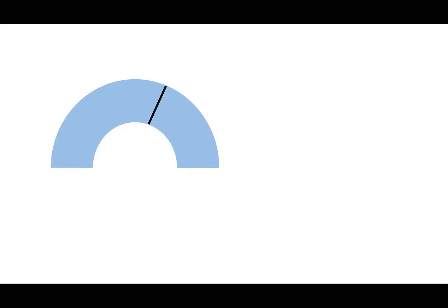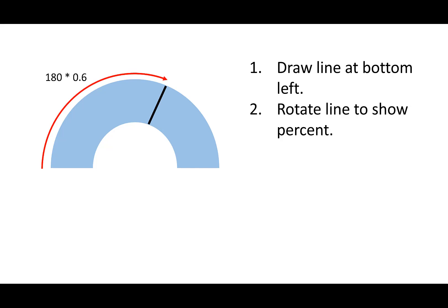Here's an example of what we're going to be drawing. First we're going to draw the blue arch, which is nice and simple. Then we're going to draw a black line at the bottom left, and to show how far around the gauge we're going to be, we're going to use rotate to rotate that line around to the right point. Using 60% — it's 180 to do the full half circle — so the amount we rotate is 180 times the score value of 0.6.